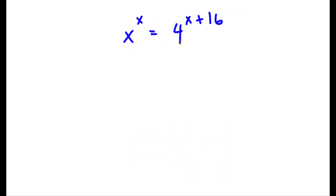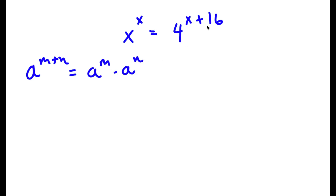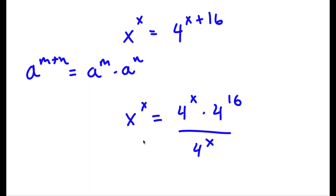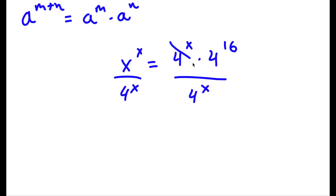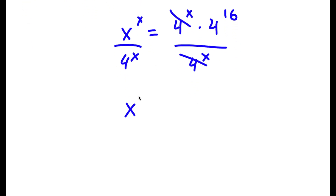So if x to the power of x is equal to 4 to the power of x plus 16. Now, if I have something in the form a to the power of m plus n, this is equal to a to the power of m times a to the power of n. So in this case, 4 to the power of x plus 16, we write this as 4 to the power of x times 4 to the power of 16. Now I'm going to go ahead and divide both sides by 4 to the power of x. These two cancel out, and I'm left with x to the power of x over 4 to the power of x is equal to 4 to the power of 16.